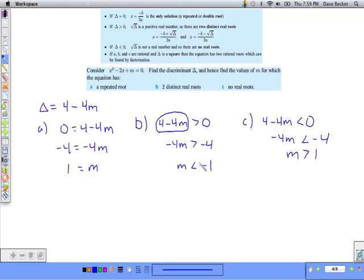Look what I did here. I hope that was bothering you. I need to erase that and re-explain it. Negative 4 divided by negative 4 is a positive 1. So m must be less than 1 to get two distinct roots because I would have something positive under the square root.